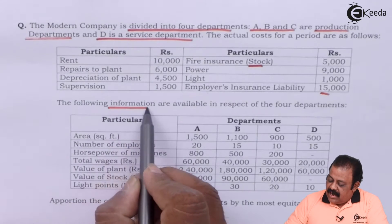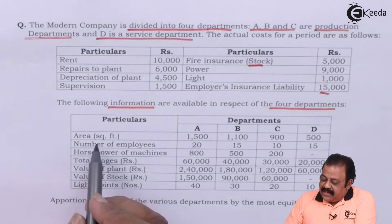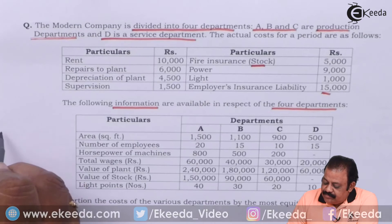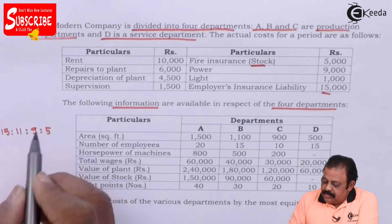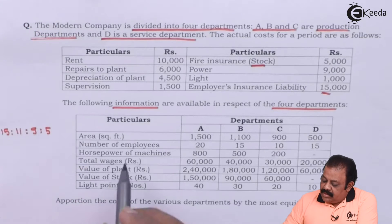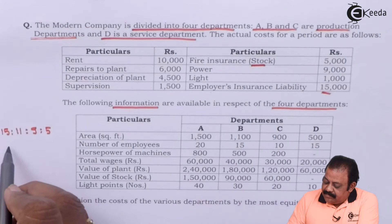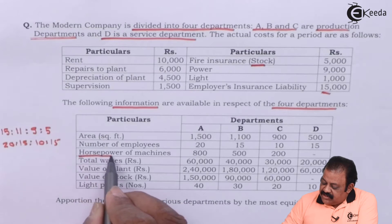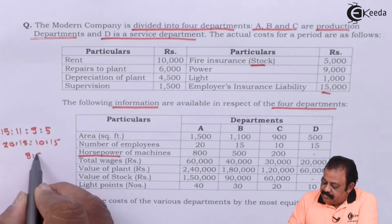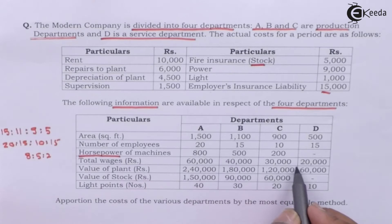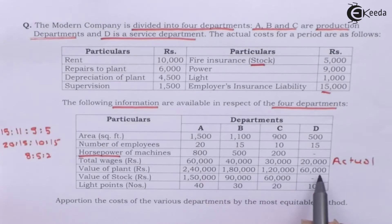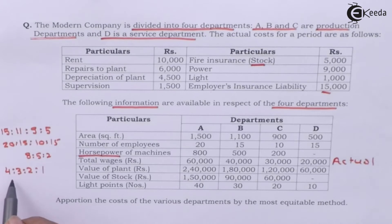The following information is available for the four departments. Area in square feet: 1,500; 1,100; 900; and 500 — giving a ratio of 15:11:9:5. Number of employees: 20, 15, 10, and 15 — ratio 20:15:10:15. Horsepower of machines: 800, 500, 200. Total wages: 60,000; 40,000; 30,000; and 20,000. Value of plant: 2,40,000; 1,80,000; 1,20,000; and 60,000 — ratio 4:3:2:1.